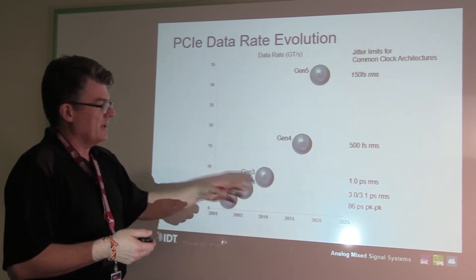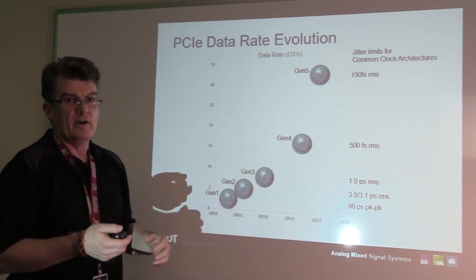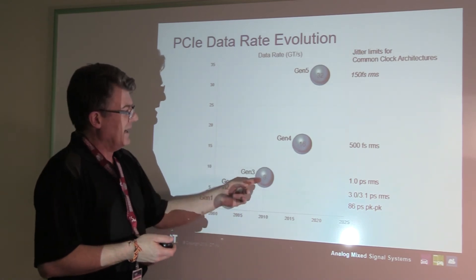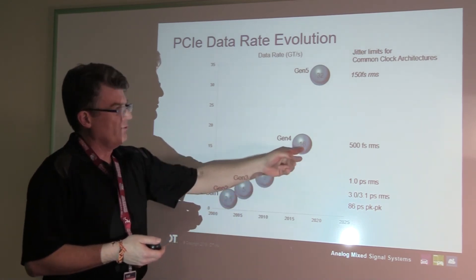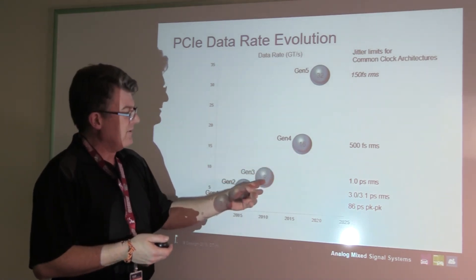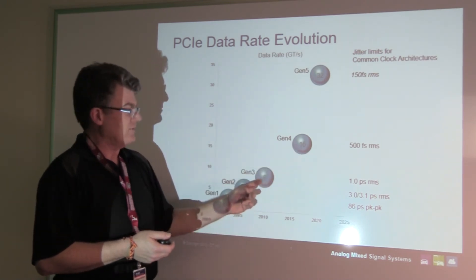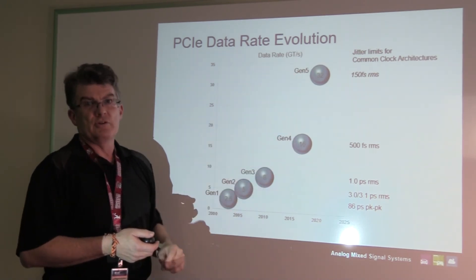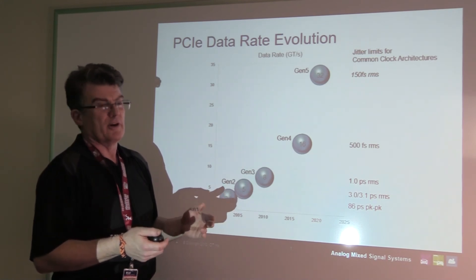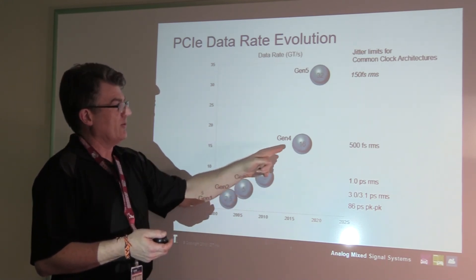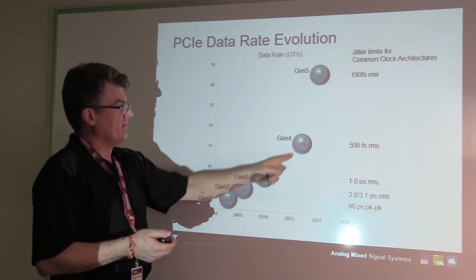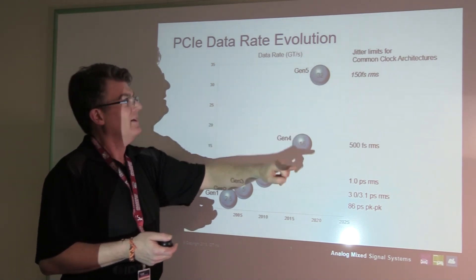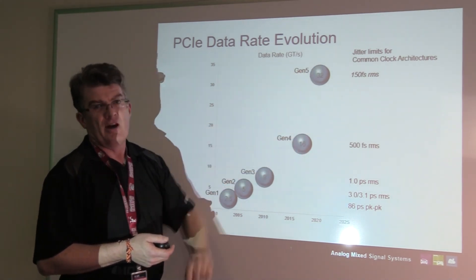Beginning with Gen 3, because the encoding for the error correction has now been fixed, Gen 4 uses the same structure and the data rate actually is doubled, as you would expect, from 8 to 16 gig. Gen 5 uses the same basic error correction structure again and the data rate is doubling from 16 to 32 gigabits per second when Gen 5 gets deployed.